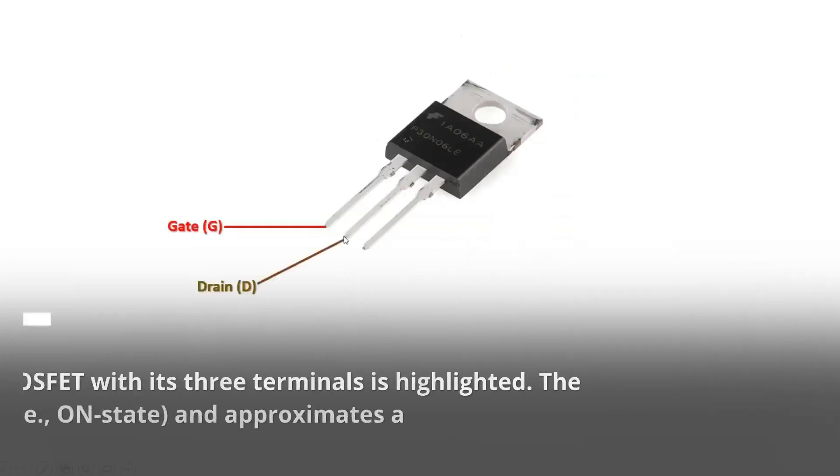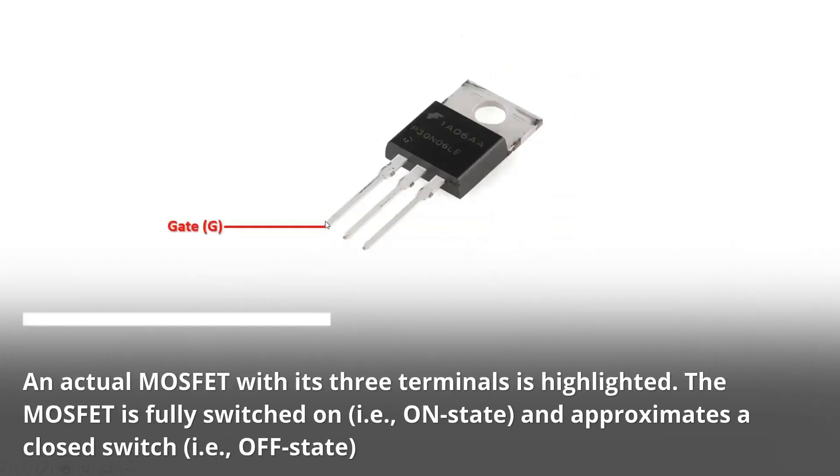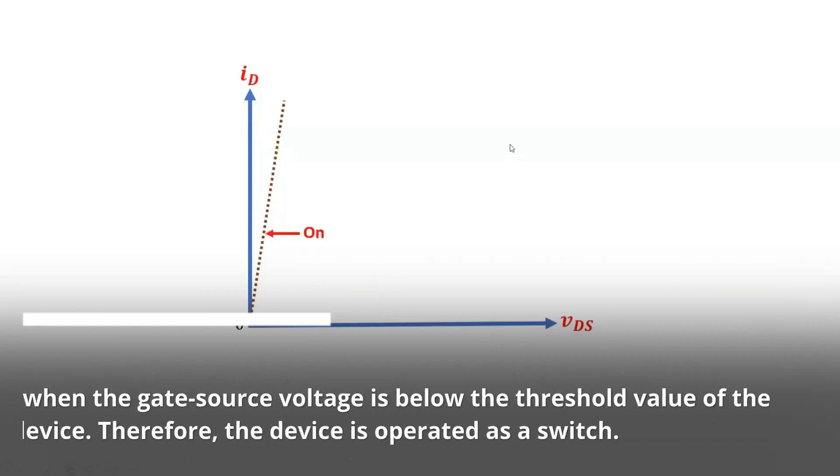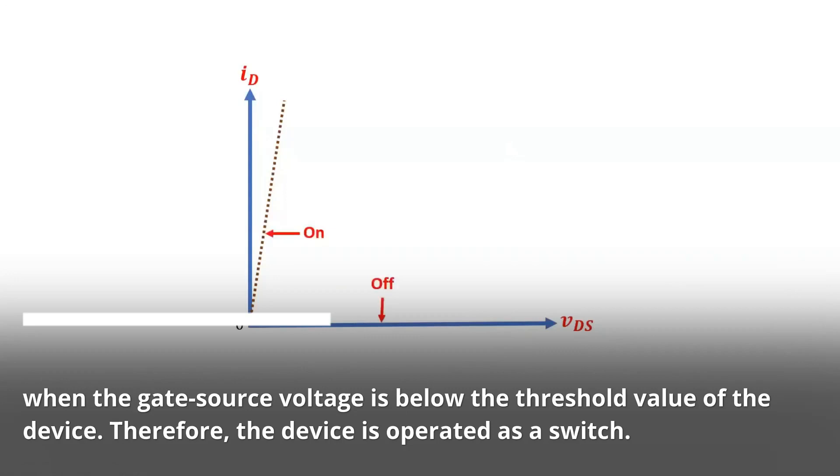An actual MOSFET with its three terminals is highlighted. The MOSFET is fully switched on (i.e. on-state) and approximates a closed switch (i.e. OFF state) when the gate source voltage is below the threshold value of the device. Therefore, the device is operated as a switch.